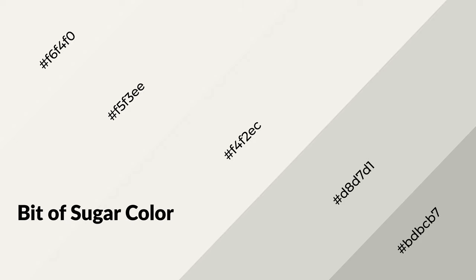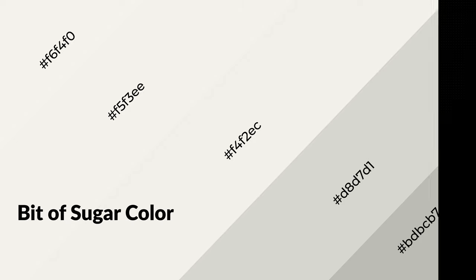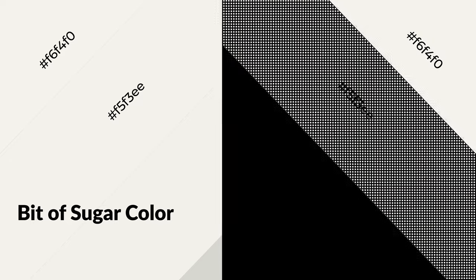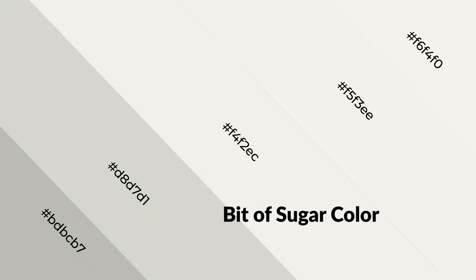Bit of Sugar is a warm color and it emits cozier and active emotions. Warm colors are symbols of warmth, fire, heat, and sunshine. They also evoke joy, passion, love, and even anger. You can see them used in restaurants and gyms.